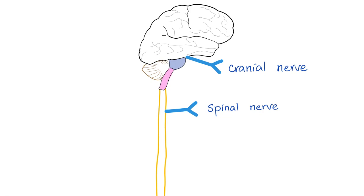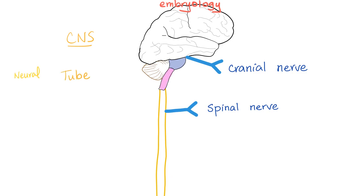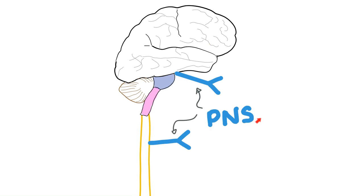Do you consider cranial nerves central or peripheral nervous system? If they're inside the skull, they must be central? Wrong. The central nervous system is only brain and spinal cord. Anything that comes out of the brain or spinal cord is, by definition, peripheral nervous system. So cranial nerves are peripheral; spinal nerves are peripheral. An embryology tip: if you're part of the CNS, you derive from the neural tube; if peripheral, you came from the neural crest.